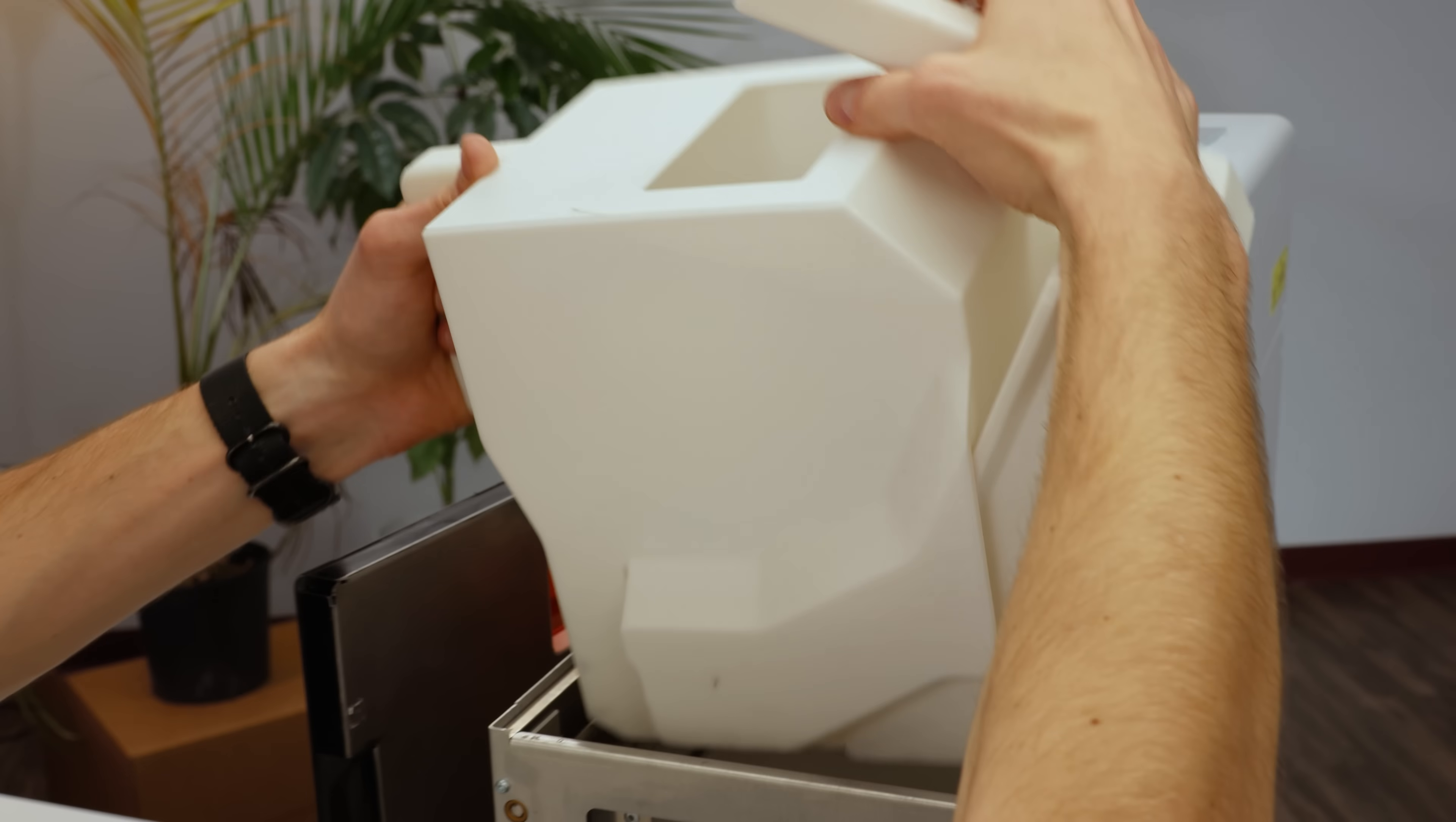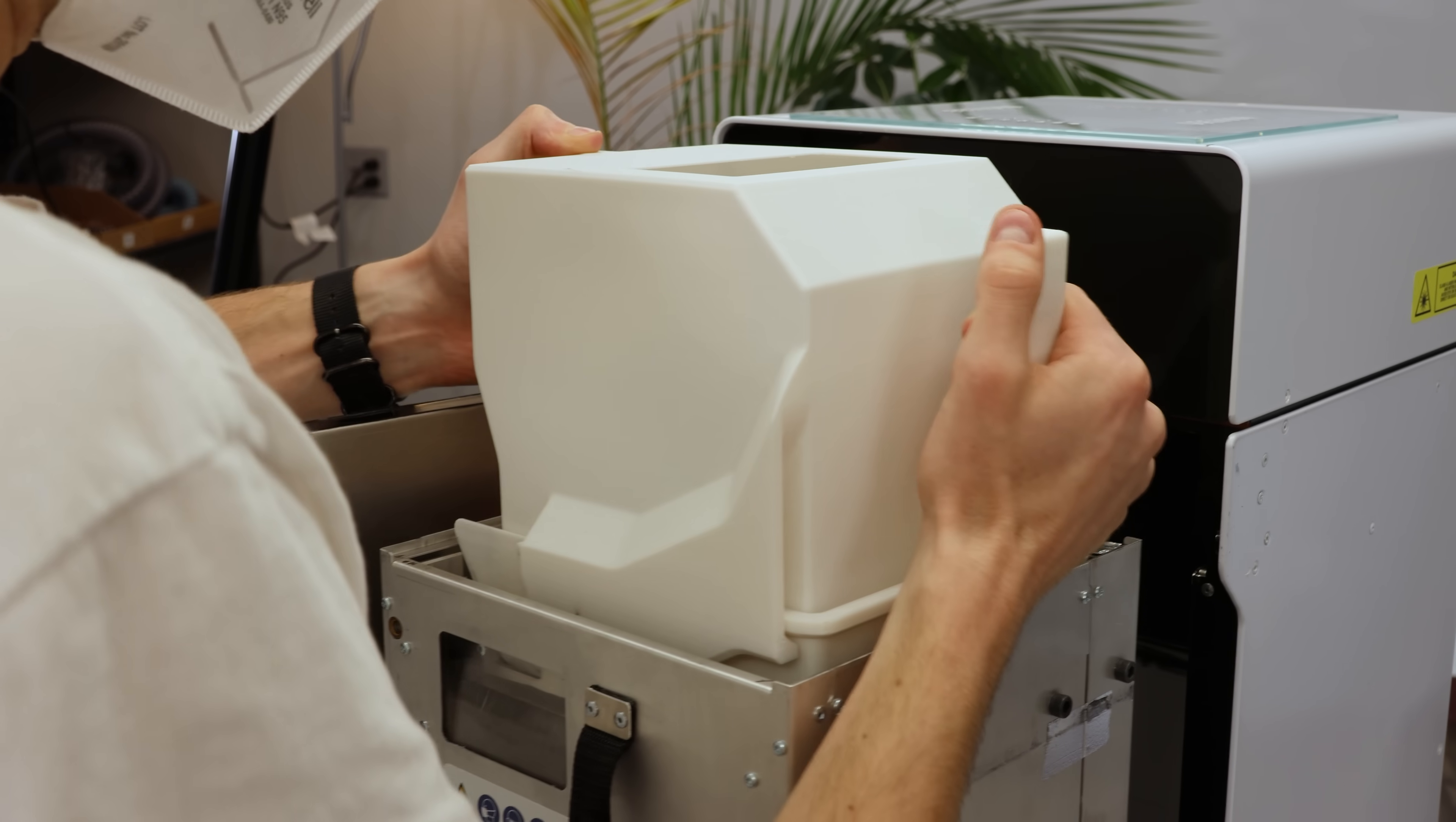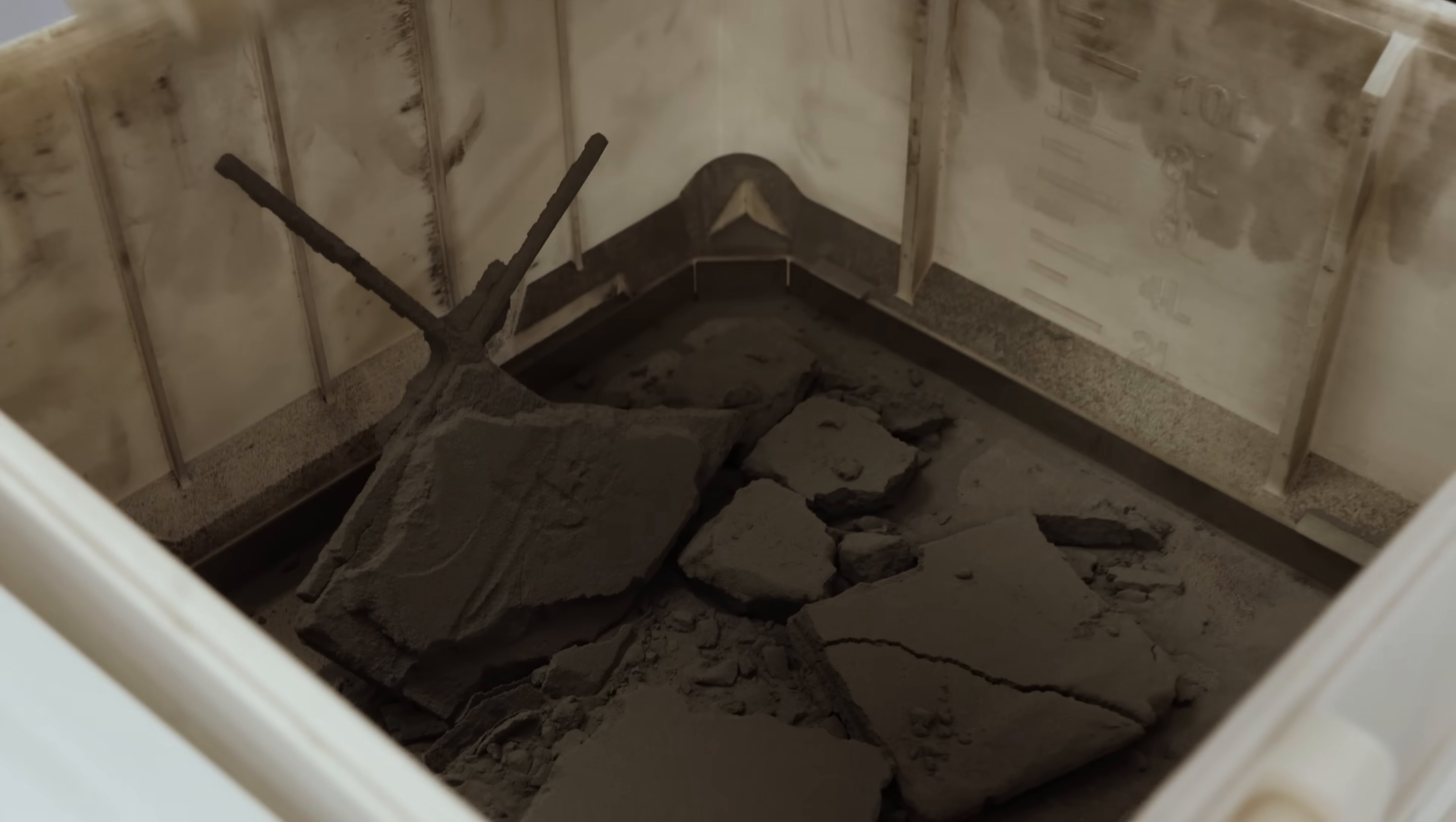Now, place the scoop in the build chamber, aligning the walls of the scoop with the walls of the build area like this. Gently hold down the scoop and hold the up button until the entire powder cake is lifted up. Then, scoop it up and carefully dump the powder into the sift bin.